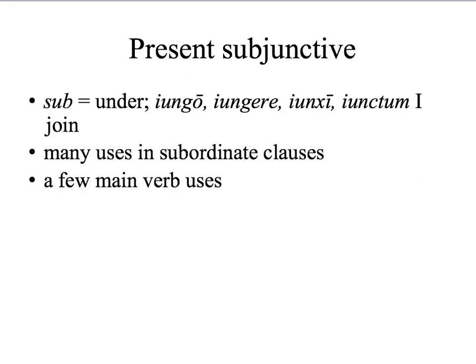Back to the present subjunctive. The word subjunctive comes from the Latin word sub, meaning under, and iungo, iungere, iunxi, iunctum — I join. As in our school motto: iuncti iuvamus — joined or united, we help. The subjunctive gets its name because there are many uses of the subjunctive mood in subordinate clauses in Latin sentences.